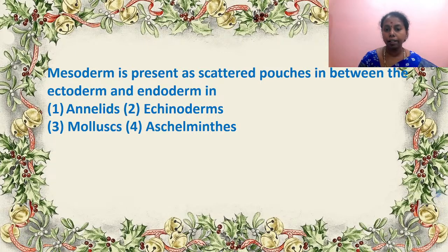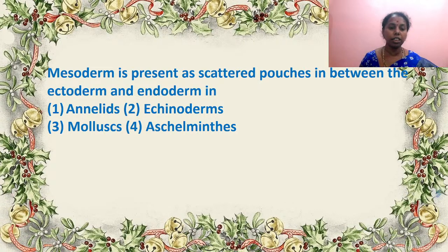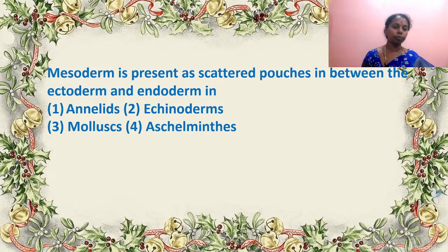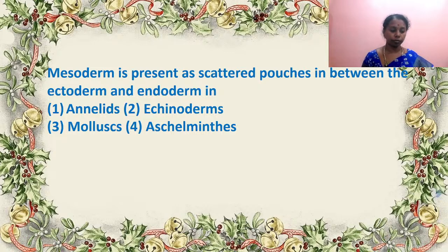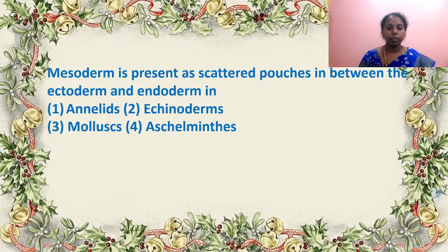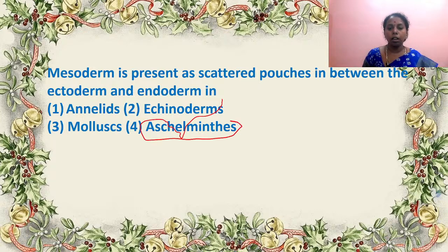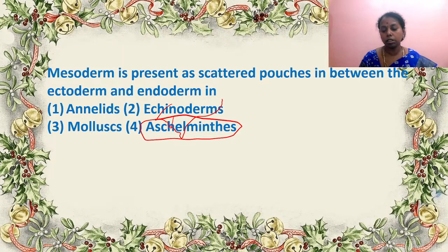Mesoderm is present as scattered pouches in between the ectoderm and endoderm in dash. Is it in annelids, echinoderms, mollusks, or aschelminthes? It is aschelminthes — as you know, they are pseudocoelomate, so they have the mesoderm in the form of scattered pouches. Pseudocoelomate aschelminthes is the correct answer.